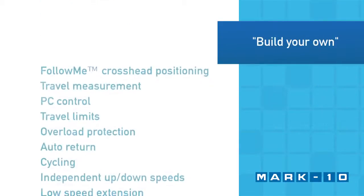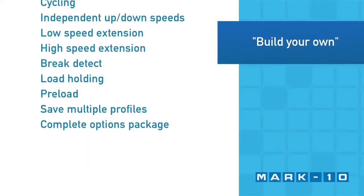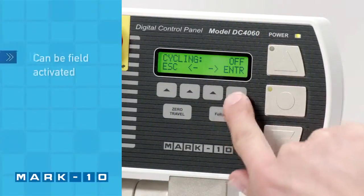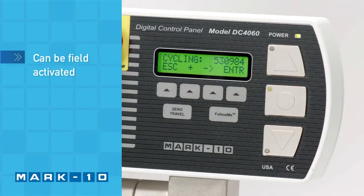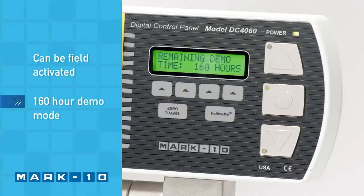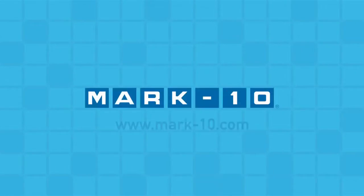The ESM303 can be custom configured to your needs and budget through its unique function configuration platform. Functions not originally ordered can be enabled in the field by inputting an activation code. All functions are temporarily enabled for a 160-hour demo period. For more information, please visit us at mark10.com.